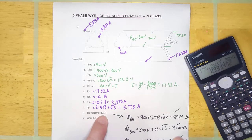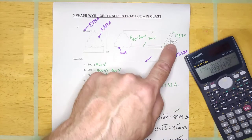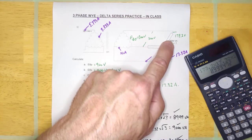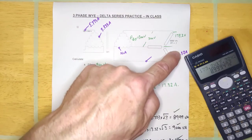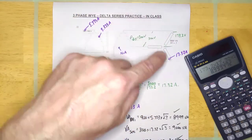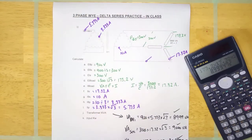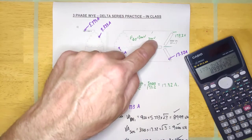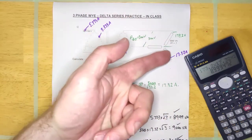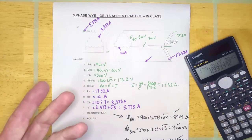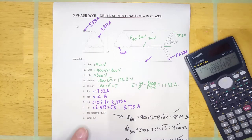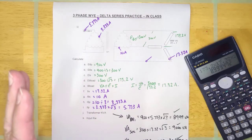Notice it's 9000 VA total. Also notice that each load is 3000 VA, and 3000 × 3 adds up to 9000 — that's another way to check it. Those three 3000 VA loads are what's determining the volt-amps of this entire circuit, and there are three of them, which adds up to 9000. It works every way.